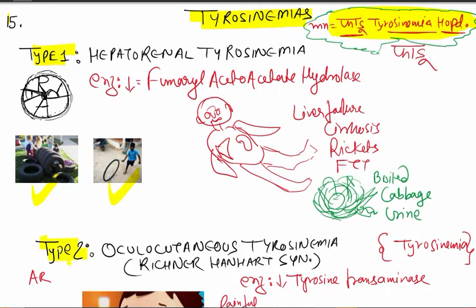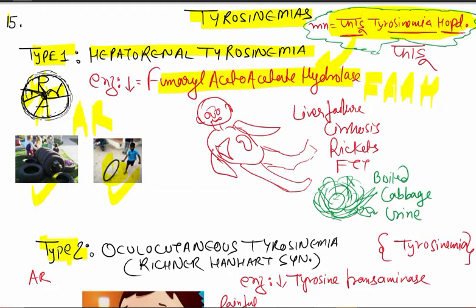We have three types of tyrosinemias: type 1, 2, and 3. Our mnemonic is 'pharu tyrosinemia OPD.' Type 1 is also known as hepatorenal tyrosinemia. 'Pharu' indicates FAAH — fumarylacetoacetate hydrolase — the enzyme that is deficient in this condition. All tyrosinemias are autosomal recessive (AR), types 1, 2, and 3, except Hawkinsinuria.